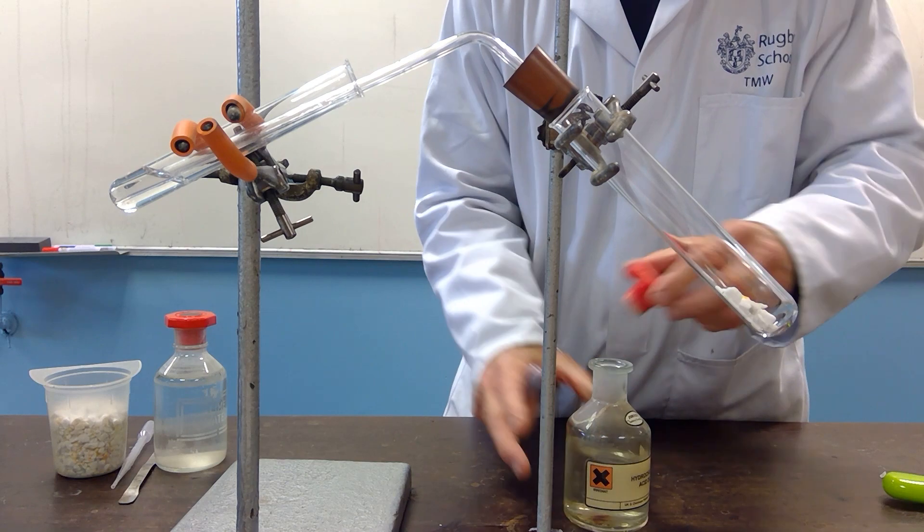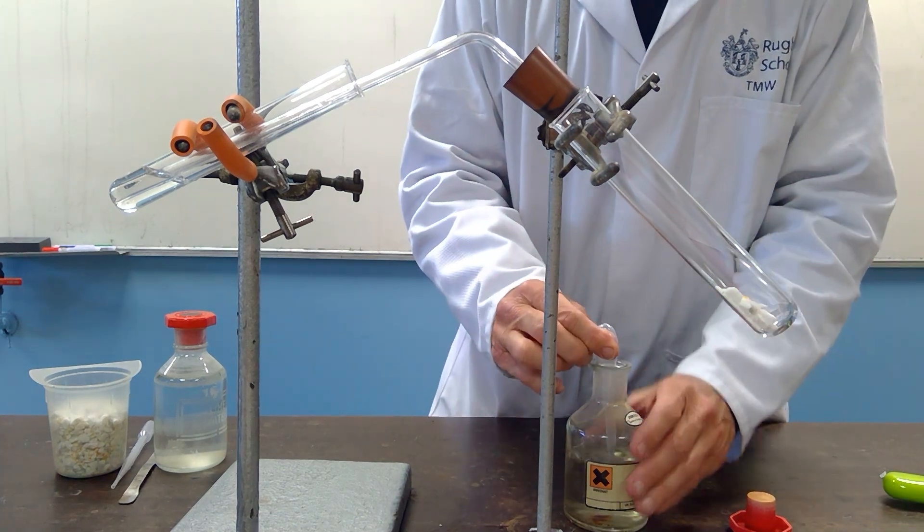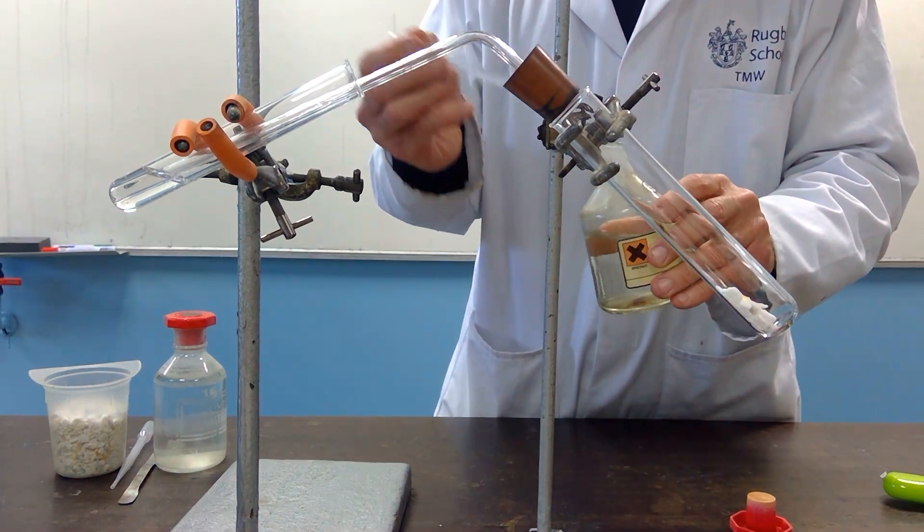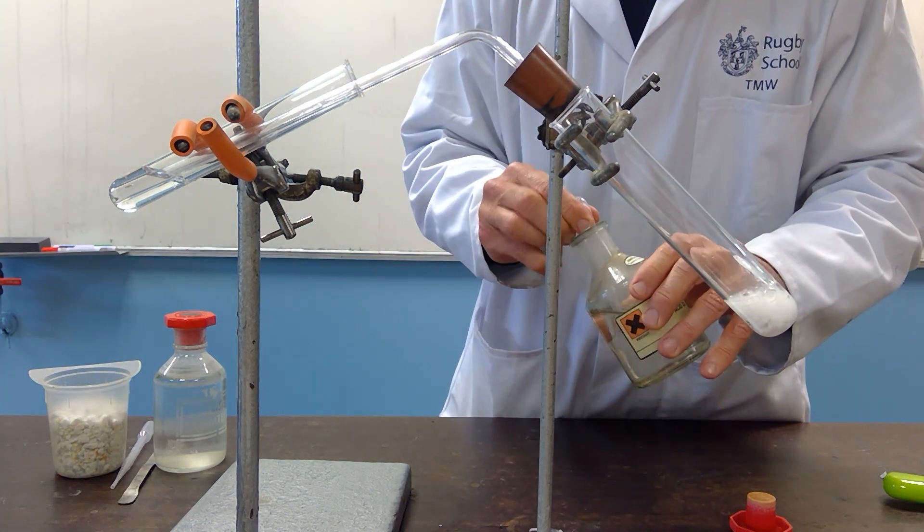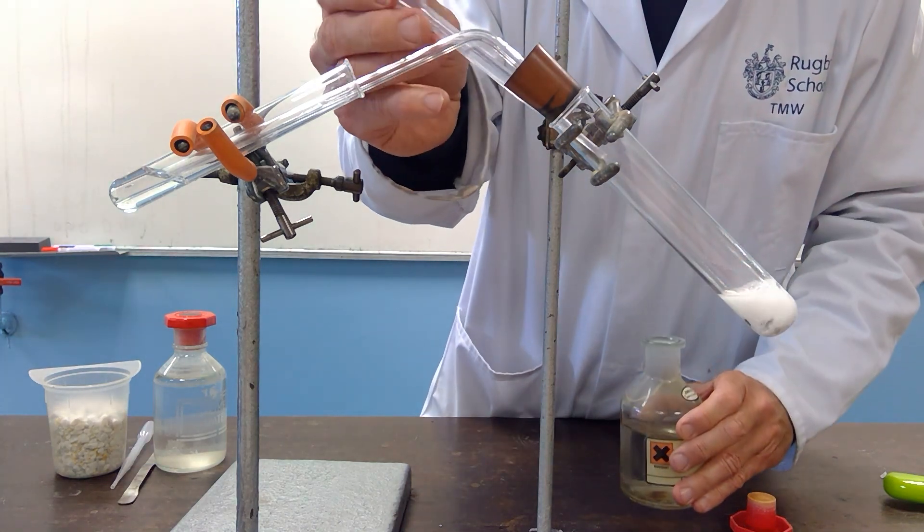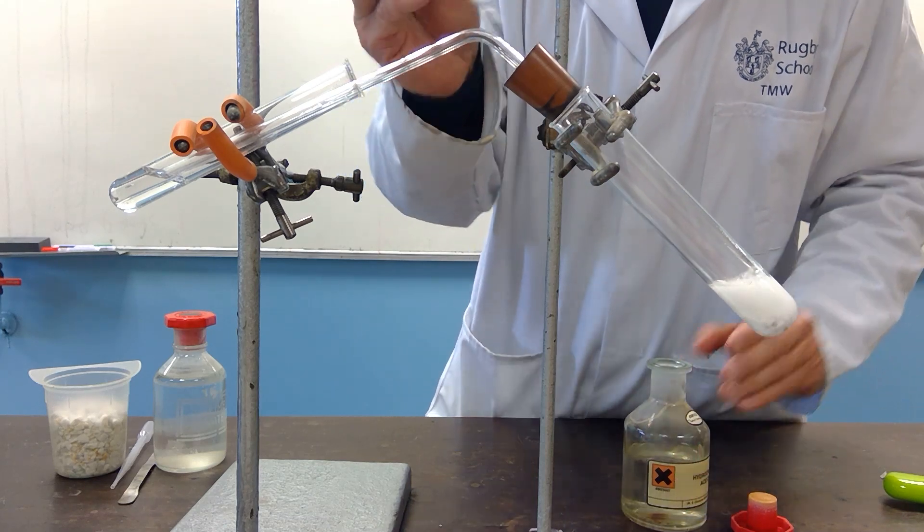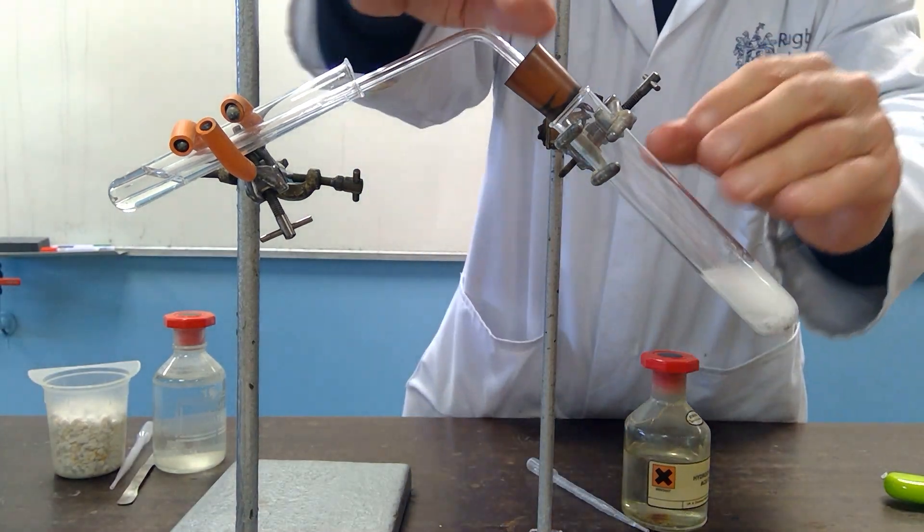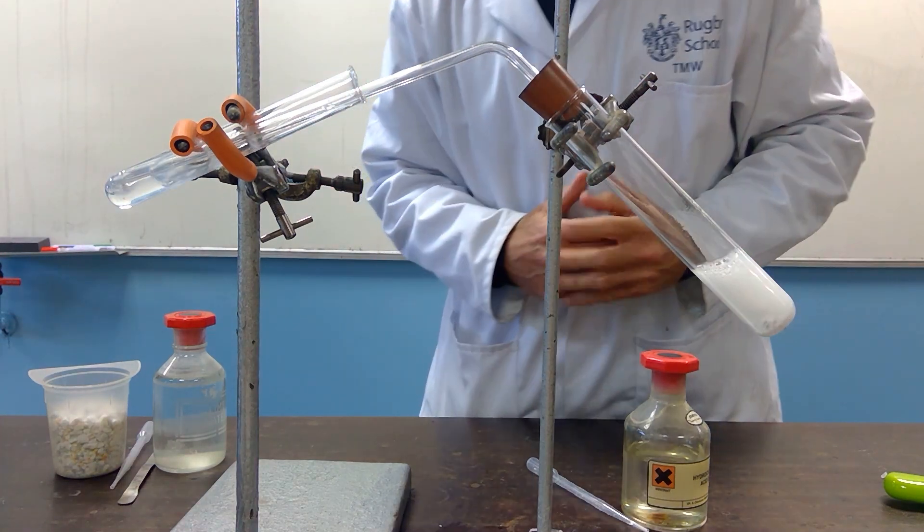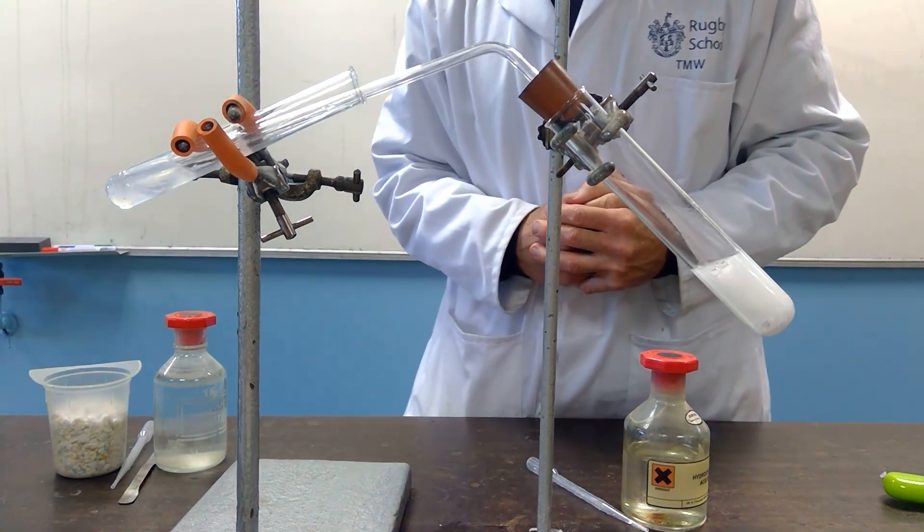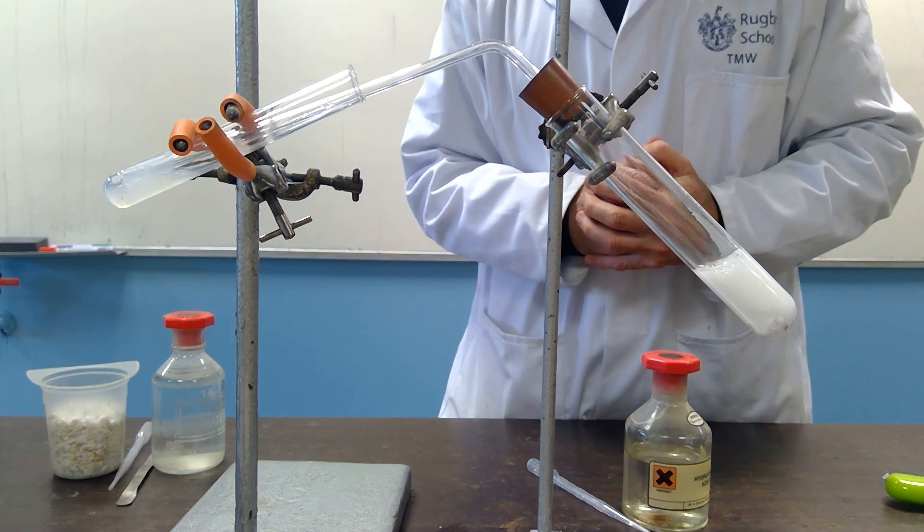So, the hydrochloric acid is added and the bung is placed on as quickly as I can. Immediate bubbling. If you place the bung into the top, you can see it bubbles through the lime water in exactly the same way as before. The lime water, of course, goes cloudy.